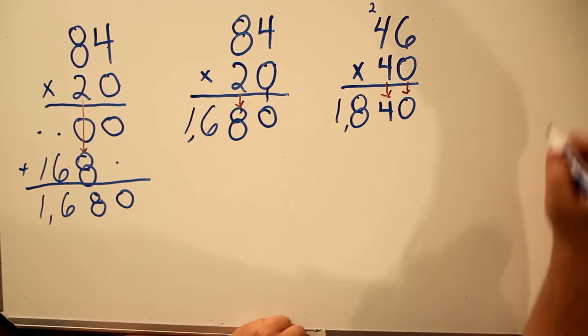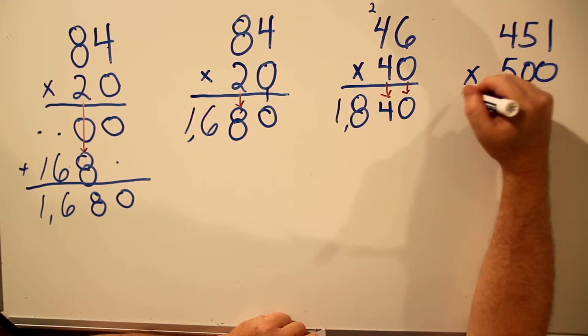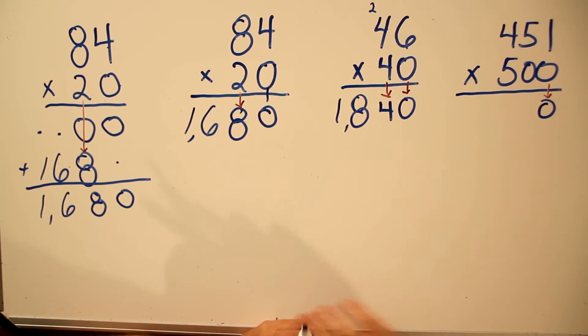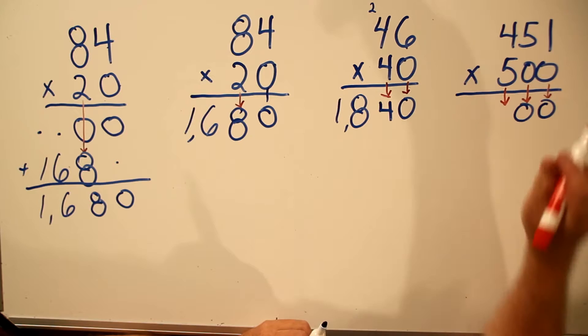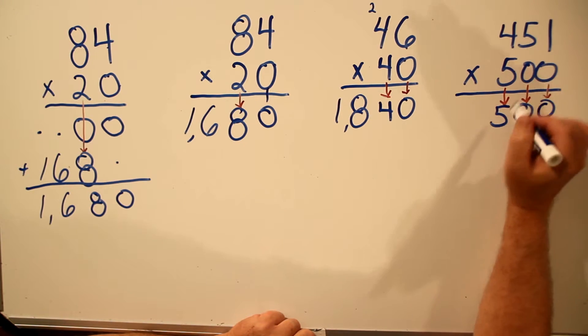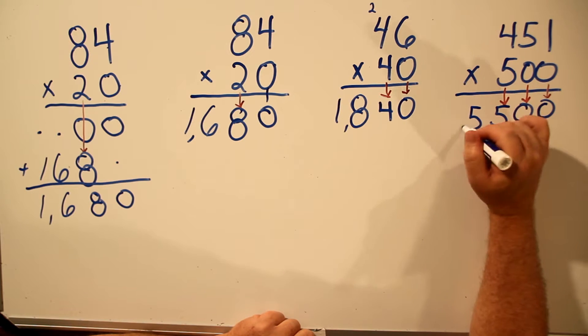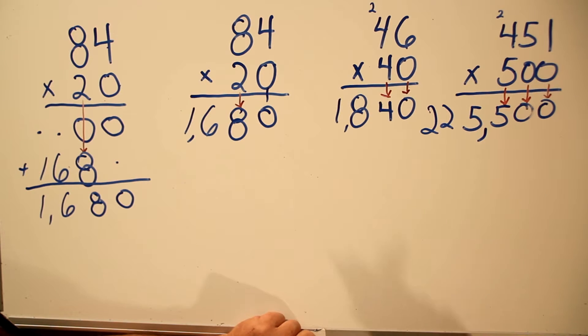Let's see what happens when we have two zeros. 451 times 500. We'll bring the zero down. The next number is zero. We'll bring this zero down. And then we'll start multiplying with a 5 and write the answer under the 5. 5 times 1 is 5. 5 times 5 is 25. Write down the 5. Carry the 2. 5 times 4 is 20. Plus 2 is 22. 225,500. And we did it all in one step.